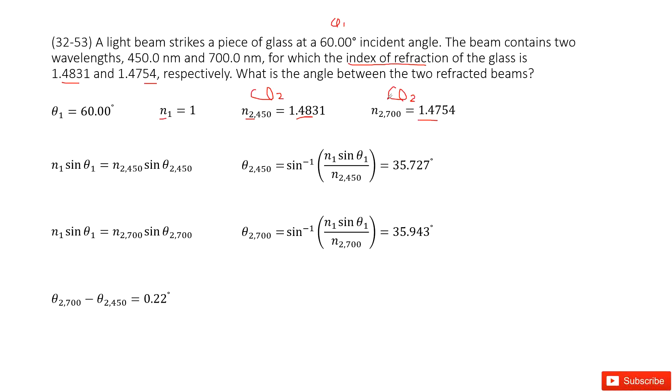So we can just write down Snell's equation. Snell's equation is the incident wave n1 sin theta 1 equals the refracted wave n2,450 sin theta 2,450. And from this equation we can get the function for theta 2,450 and input the given quantities.